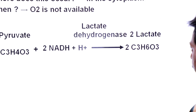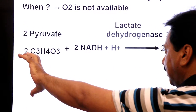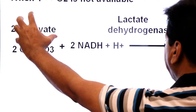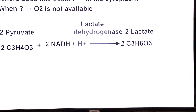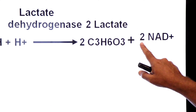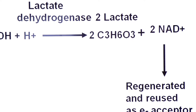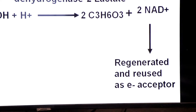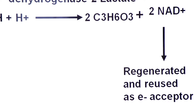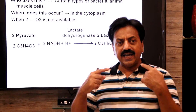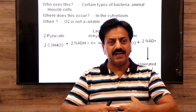When NADH returns its protons and electrons to pyruvate, the pyruvate molecules are converted into lactate (lactic acid). Two molecules of lactic acid are produced. Again, two molecules of NADH are regenerated and reused as electron acceptors, so that the glycolysis process keeps running and those electrons can be carried to oxygen when it becomes available.